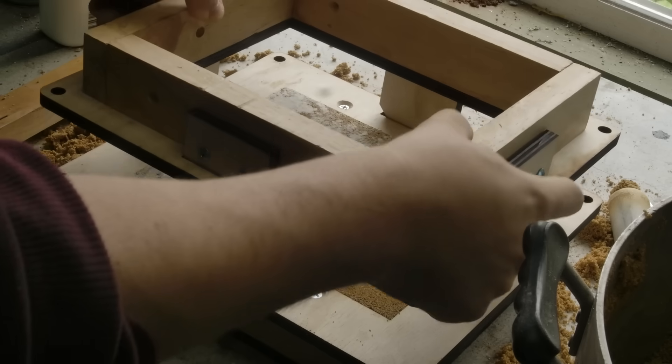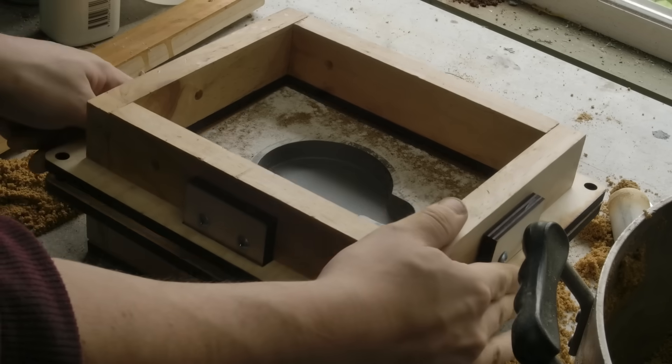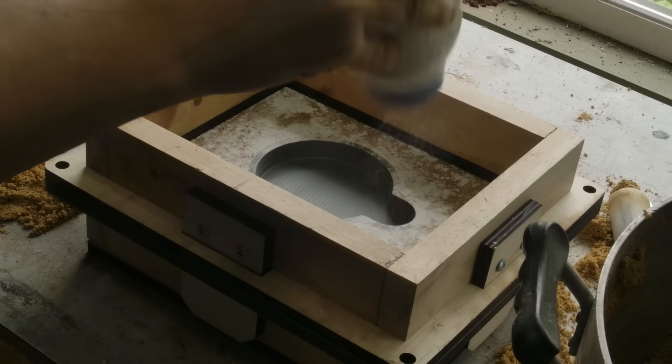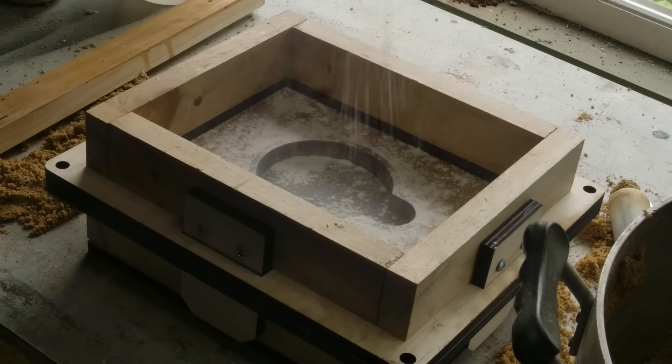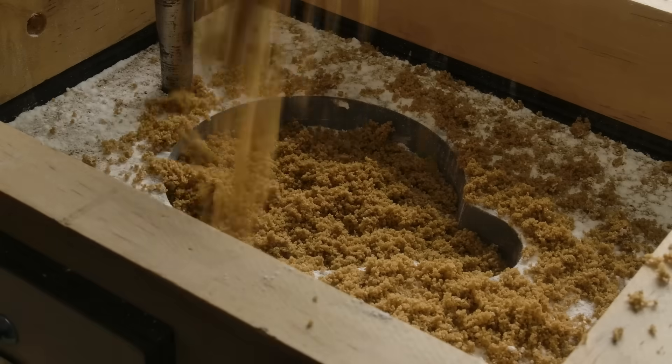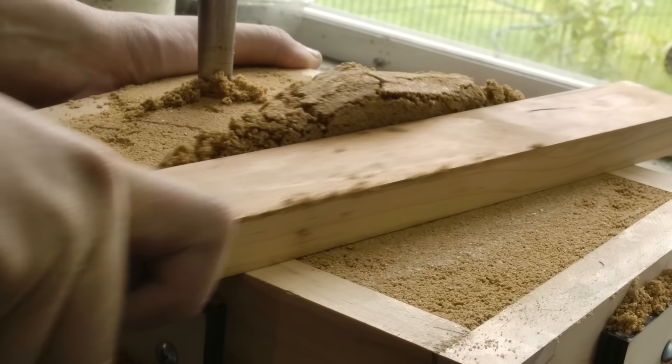The cope was much the same process, aside from the inclusion of a tapered sprue, that would be later used to pour the molten metal. More baby powder is added, followed by sand, before scraping off the completed form.